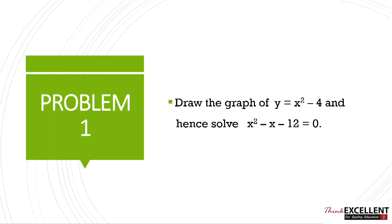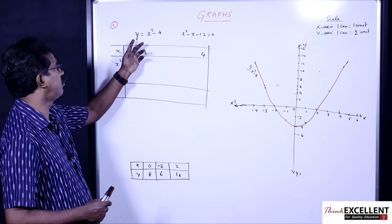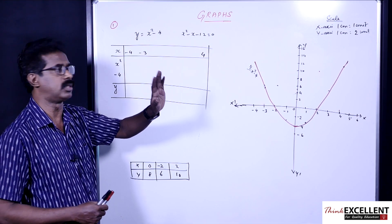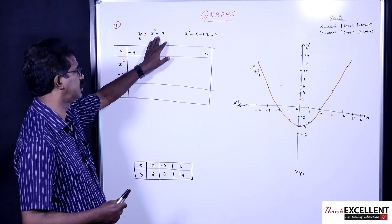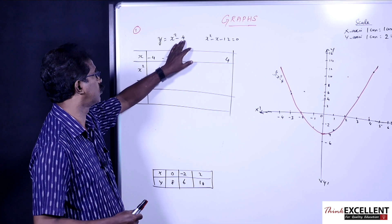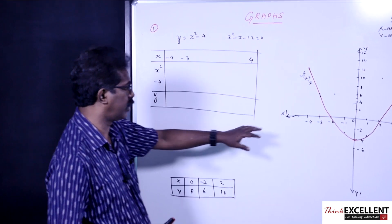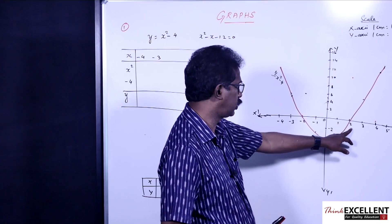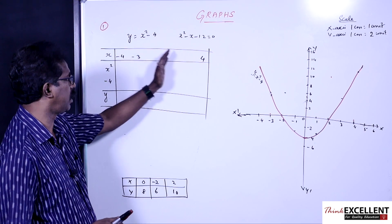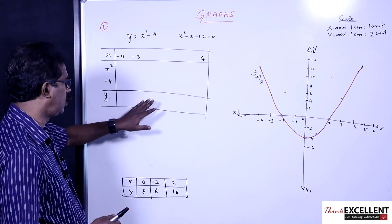Now listen: draw the graph of y = x² - 4 and hence solve x² - x - 12 = 0. Draw the graph of y = x² - 4 — that's the first part. You know how to do that: put x² - 4 = 0, which gives x = +2 and x = -2. That is, when you draw the graph it cuts the x-axis at +2 and -2. You draw the table — that part you know.